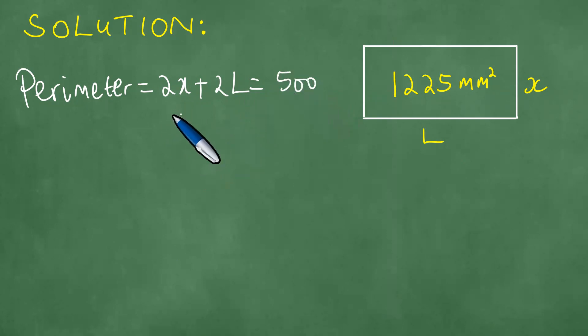Dividing both sides by 2 gives us x plus L is 250. And this means L is 250 minus x.